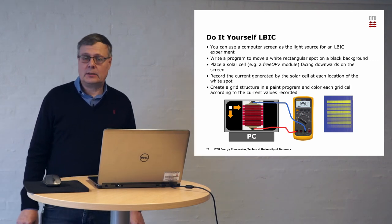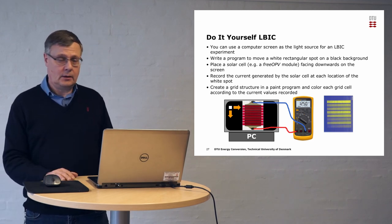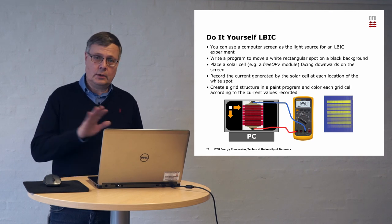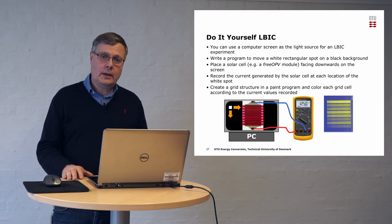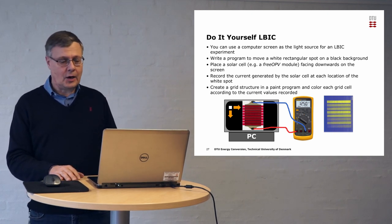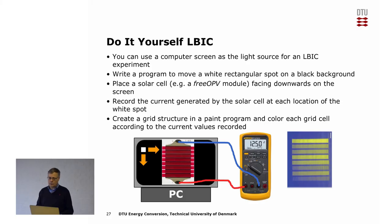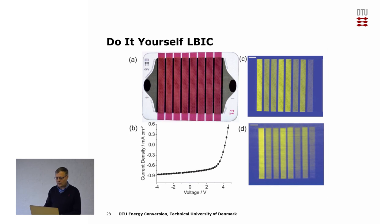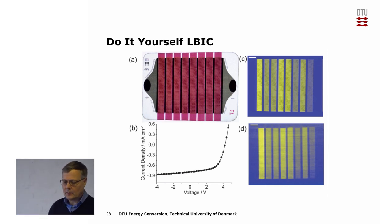Finally, I'll talk about a do-it-yourself ELBIC experiment you can conduct at home. You will only need a computer, a solar cell, and a voltmeter. Connect the voltmeter to the solar cell, create a black screen in a paint program with a white dot that you can move around. For each position of the white dot, note the voltage output of the solar cell. When finished, translate the voltage value to a color value and construct a false color image. This actually works rather well. If you make the white spot very small it takes a very long time, but you create an image very similar to what our instrument produces.